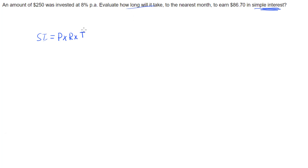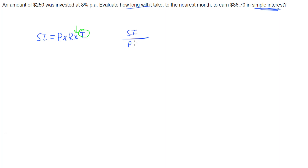Since we're chasing time, we don't want to leave it as principal times rate times time. We need to do the opposite of multiply — which is divide — to cancel out the principal and the rate. So we're going to have simple interest divided by principal times rate.